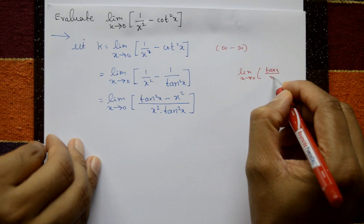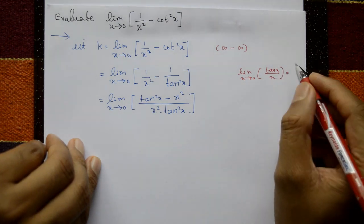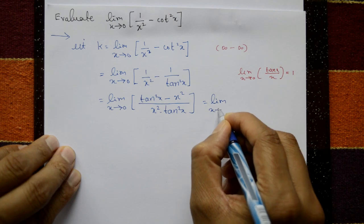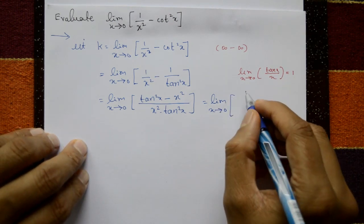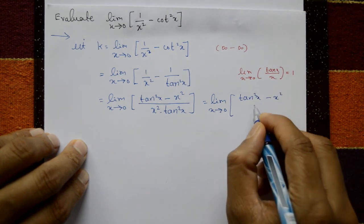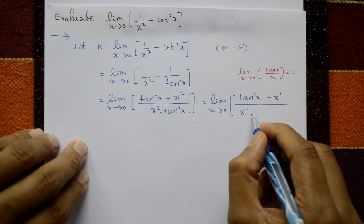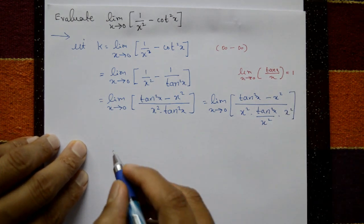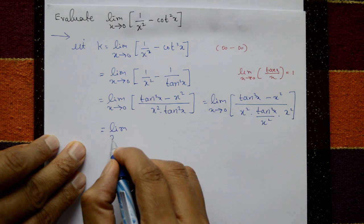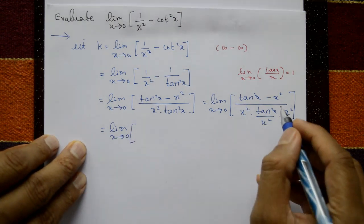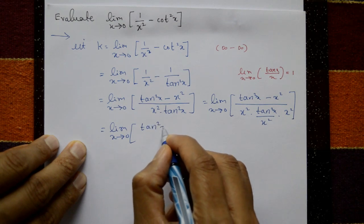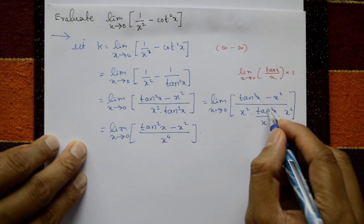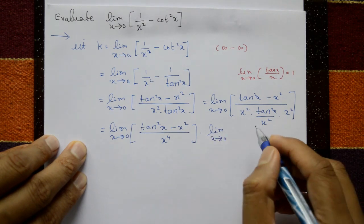Using the standard limit tan(x)/x equals 1, we separate the expression. This equals limit x tends to 0 of (tan²x minus x²) divided by x⁴, multiplied by the limit of (x/tan x)² which equals 1.